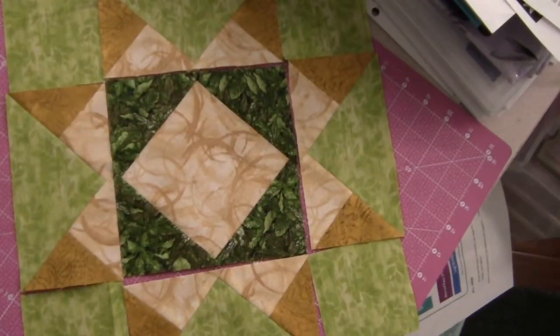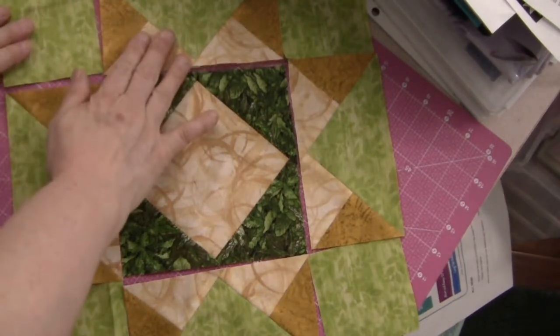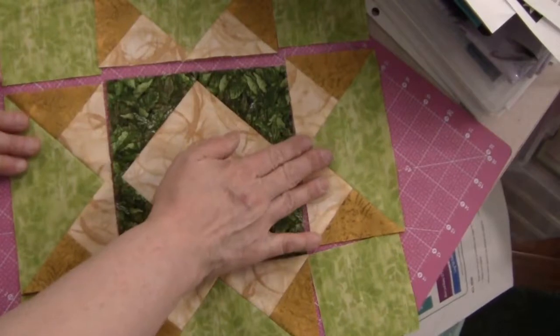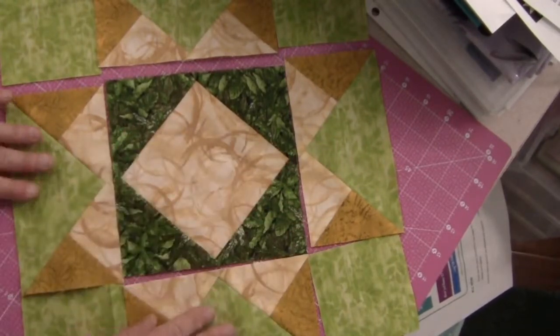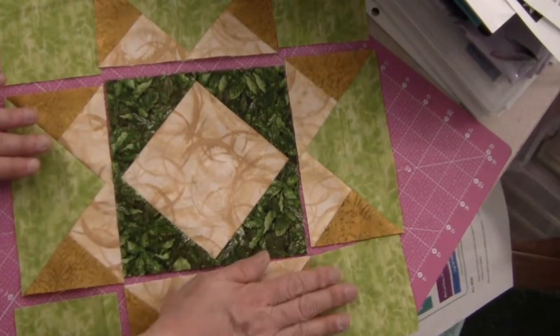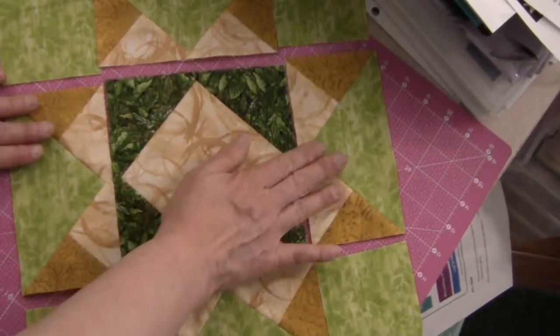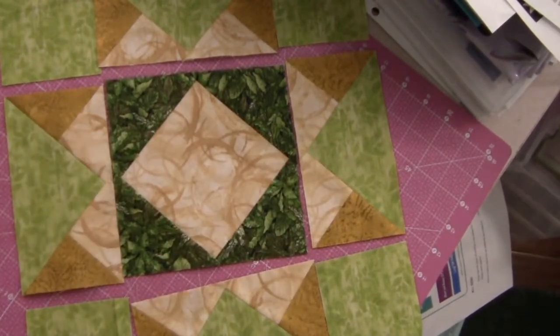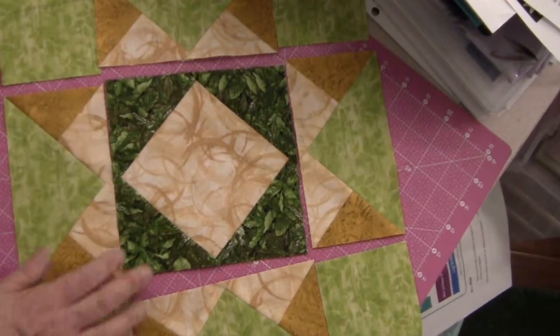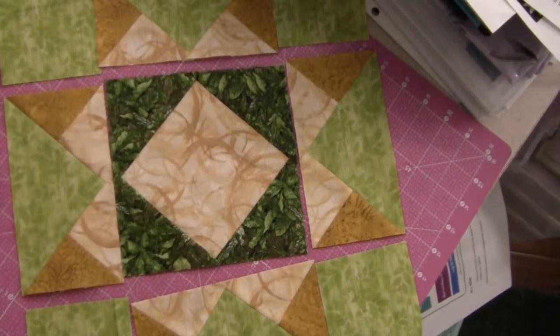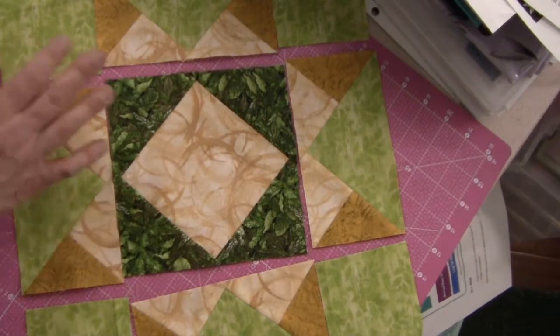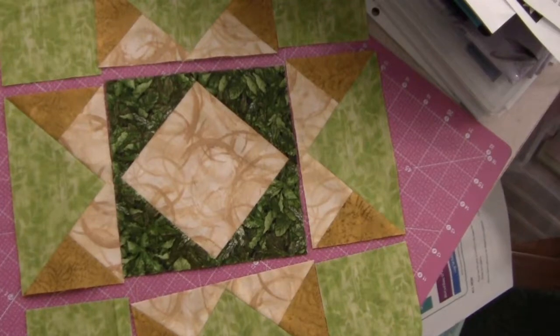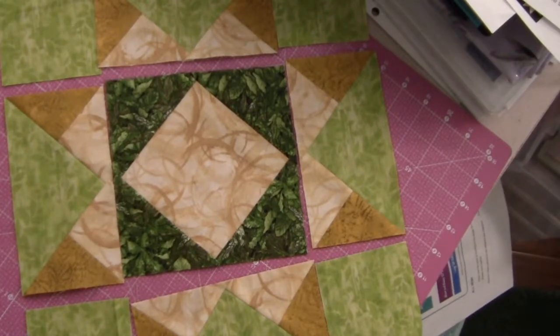Here I've laid out the Missouri Star, block 8. I've got my squares around the outside with my geese against my square in a square. I'm going to put it together into three rows. I'm going to press the seams open as I stitch these, and then I can stitch my rows together and press those seams open also.